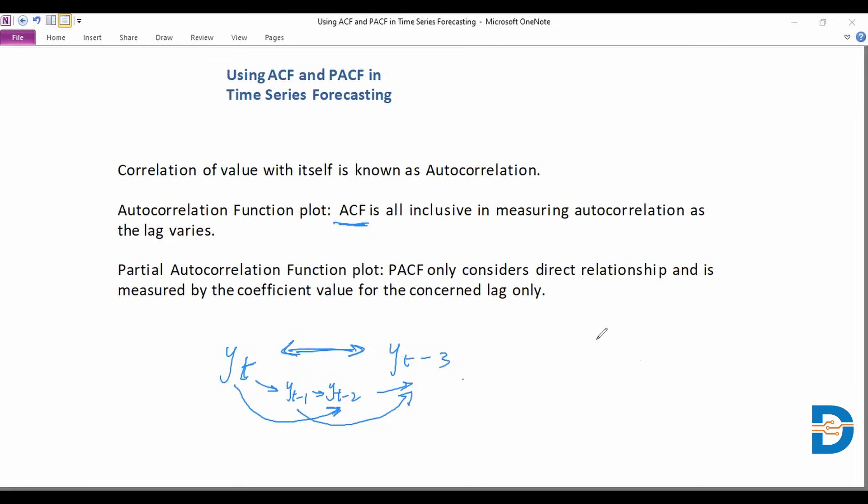With regards to talking about a partial autocorrelation, we are really looking at this direct relationship all by itself, assuming that none of the intermediate values are interfering in this relationship. So that's why it's only a partial autocorrelation.